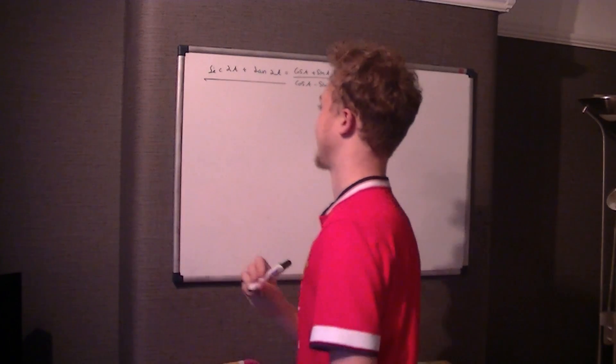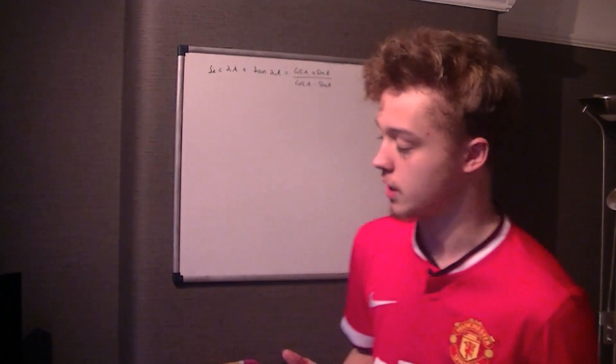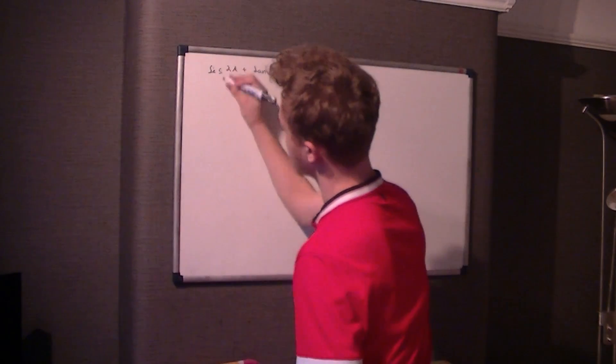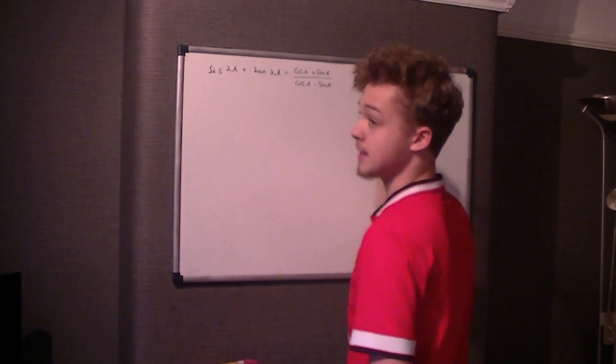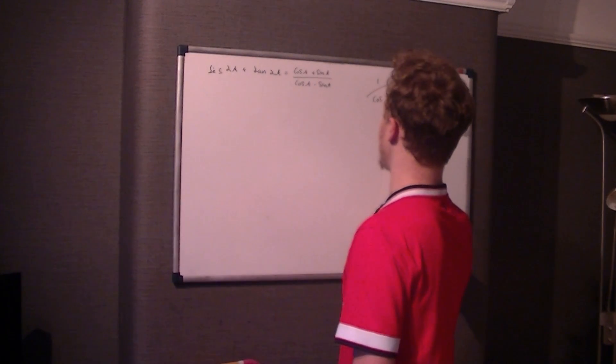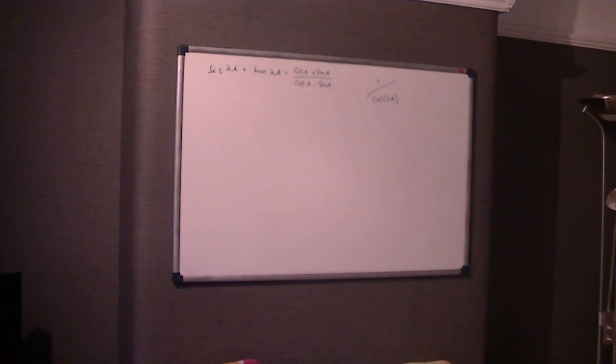Don't be put off by the fact that it says 2a - that's the same as saying 2x. We will need to change them into double angle formulas. For sec 2a, we have no idea what that is directly, but sec a is 1/cos a - look at the third letter, which says cos. So sec 2a is 1/cos 2a.